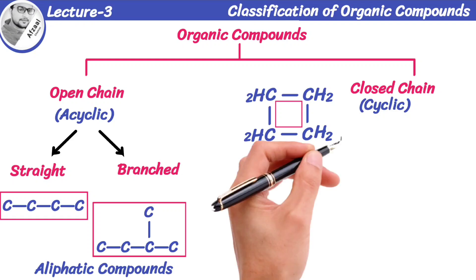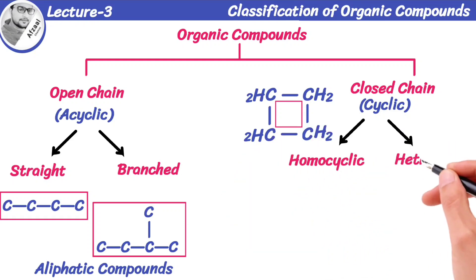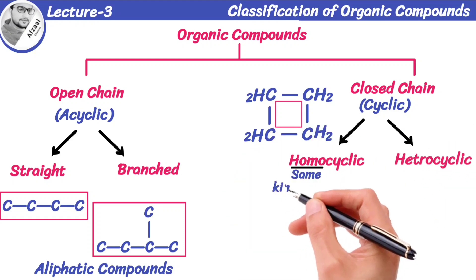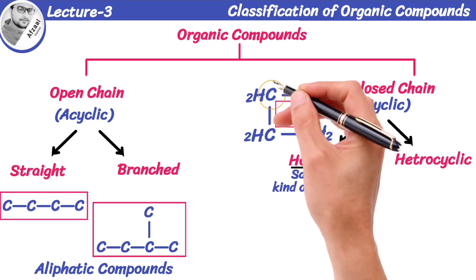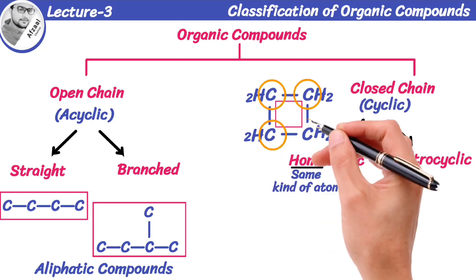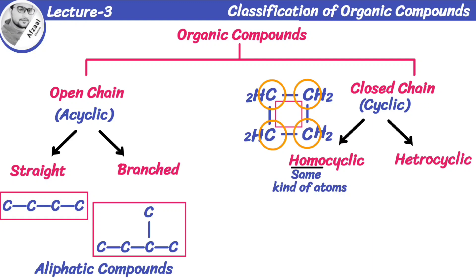They are further divided into two classes, homocyclic compounds and heterocyclic compounds. Homo means the same. These compounds contain rings that are made up of same kind of atoms, like carbon atoms.